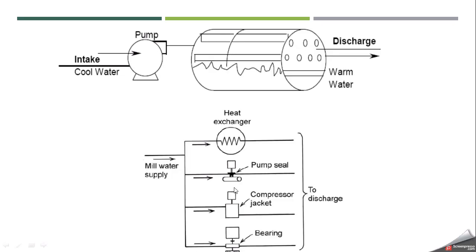This is a schematic diagram of a once-through system. Cold water is taken from a source using a pump and sent to a heat exchanger or heat transfer surfaces. After absorbing the heat, the water is discharged on the other side. In another configuration, the water supply is divided for cooling different parts like heat exchangers, pump seals, compressor jackets, and bearings, and then discharged without recycling.